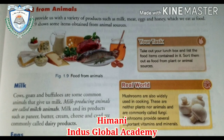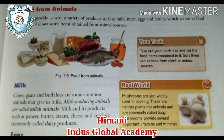So, food from animals. As I told you, we are getting food from plants as well as animals. Animals provide us food with a variety of products such as milk, meat, egg, and honey which we eat as food. In the figure, you can see some items obtained from animal sources.